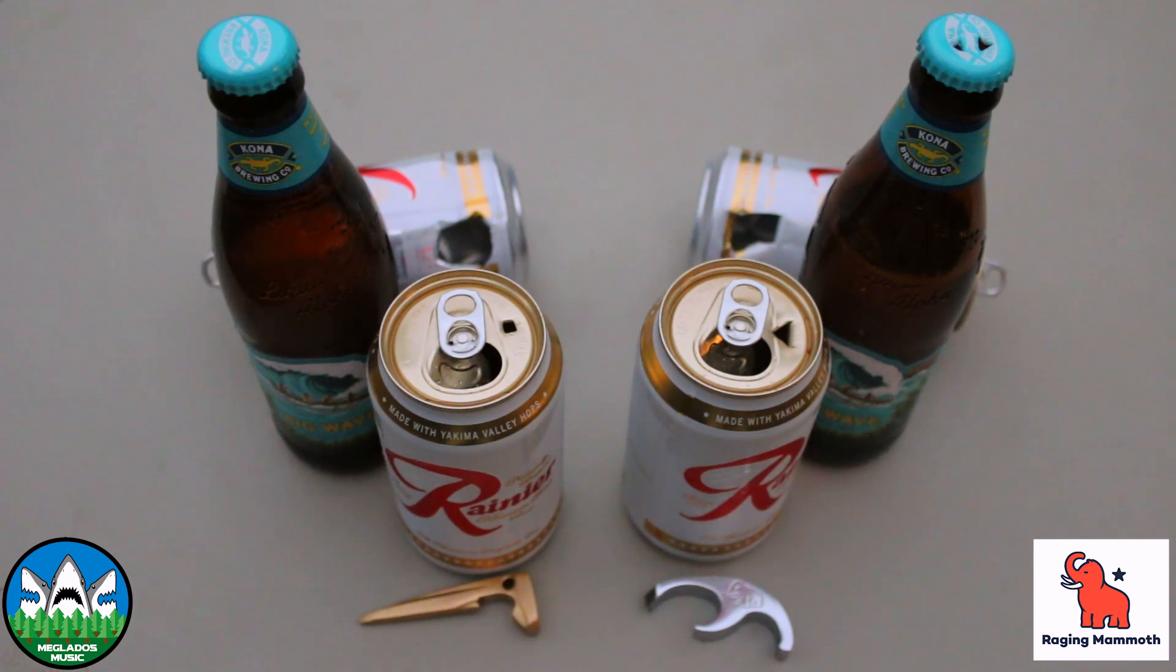For shotgunning beers, the Beer Spike does give you kind of a more versatile hole. You can create however big a hole you want. Whereas the Saber Tooth, you're kind of limited to that. But they're both really great. I think that the Beer Spike is awesome and I'm glad that I have both.